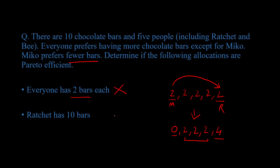Ratchet has ten bars and Miko has zero. Miko has zero, so she's as happy as she can be. And if Ratchet decides to share any of his chocolate bars with the rest, he will definitely be worse off. So there's no room for Pareto improvement — this is Pareto efficient.